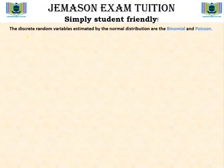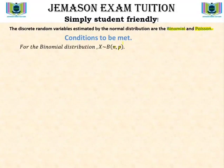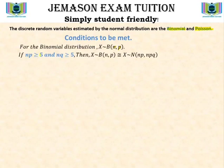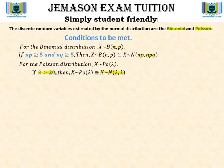The discrete random variables estimated by the normal distribution are the binomial and Poisson distributions. For the binomial distribution with parameters n (number of trials) and p (probability of success), we need np ≥ 5 and nq ≥ 5, where q is the probability of failure. When these conditions are met, the binomial is approximated by the normal distribution with mean np and variance npq. For the Poisson distribution with parameter lambda, if lambda > 20, it approximately follows the normal distribution with mean lambda and variance lambda.